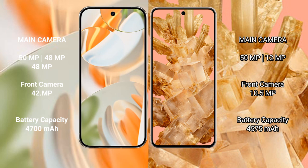The Google Pixel 9 Pro features a triple rear camera setup: 50 MP plus 48 MP plus 48 MP, and a 42 MP front camera. The Asus ROG Phone 8 has a triple rear camera setup of 50 MP plus 32 MP plus 13 MP, and a 32 MP front camera. The Pixel 9 Pro has a 4700 mAh battery with 27-watt fast charging support.